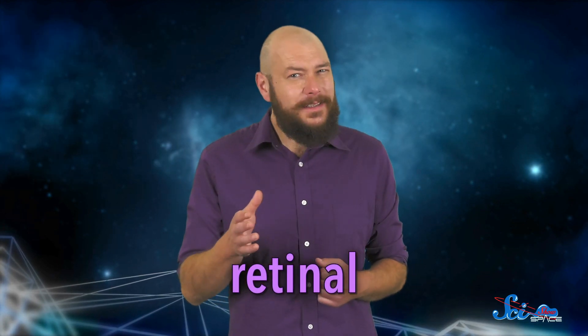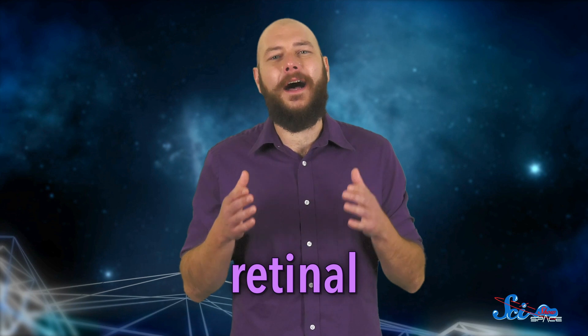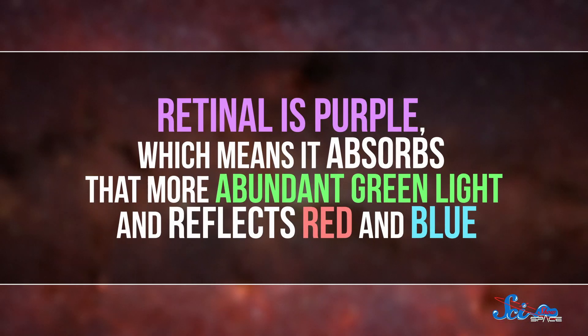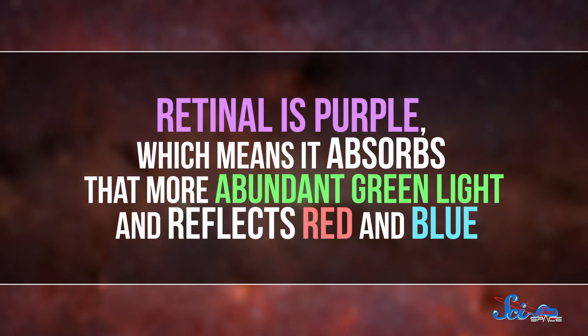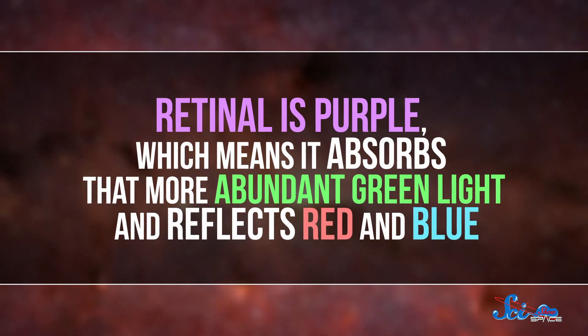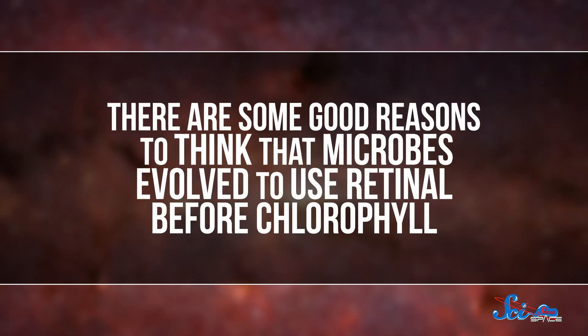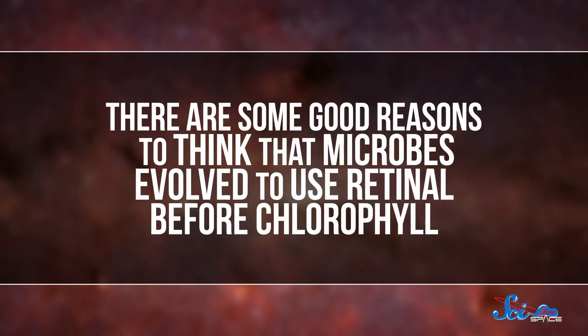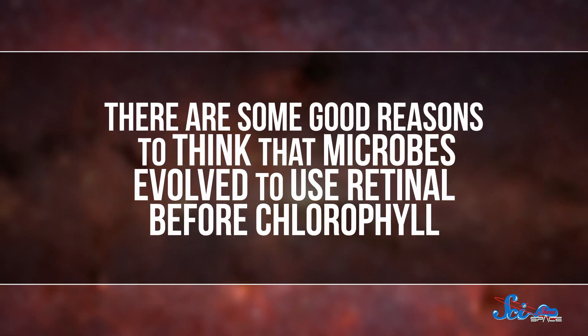See, there are some organisms that don't use chlorophyll to get energy from light. Instead, they use another type of pigment called retinol, which is basically the opposite of chlorophyll when it comes to light absorption. Retinol is purple, which means it absorbs that more abundant green light and reflects red and blue. And there are some good reasons to think that microbes evolved to use retinol before chlorophyll.